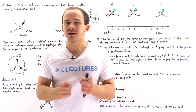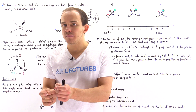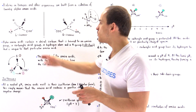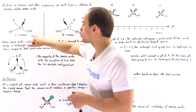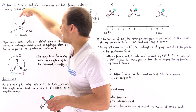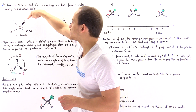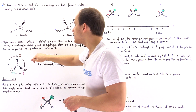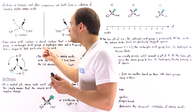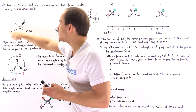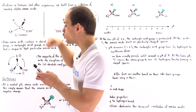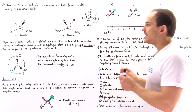A chiral carbon is a carbon that contains four different groups attached to it. In this case, one group is the carboxylic acid, another is the amino group, the third is the H atom, and the fourth is the side chain R group unique to that amino acid. So 19 out of 20 amino acids are chiral, but glycine's R group is also an H atom, so glycine is not chiral.